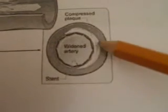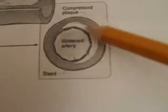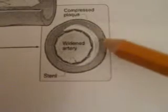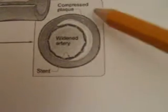You can see here that this is where the widened artery takes place because of a stent that's creating a patent vessel. This is a compressed plaque formation where the plaque formation that took place is now compressed and therefore the luminal size allows for appropriate coronary blood flow.